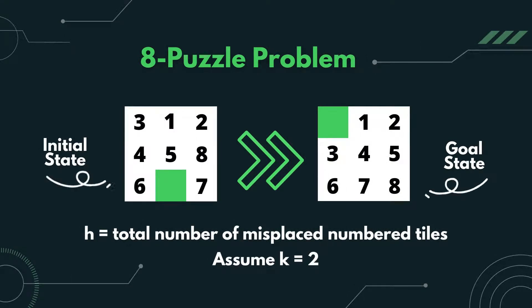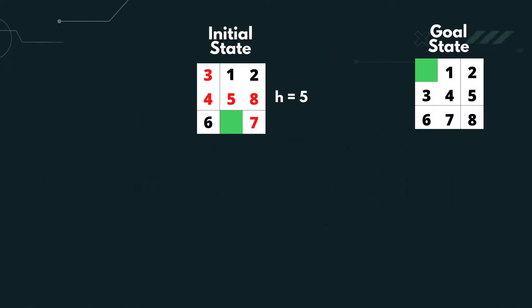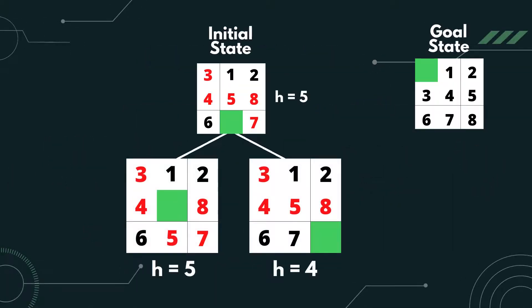This time, the eighth puzzle. We want to get from initial state to goal state. Let's assume the heuristic value is the total number of misplaced numbered tiles and K is 2. From the initial state, we generate two random states. Then, for each generated state, we generate another 2.